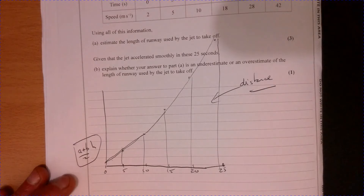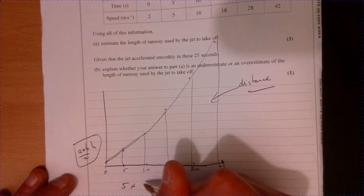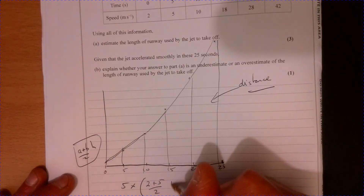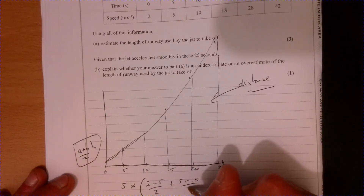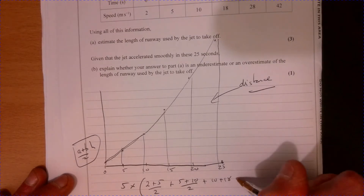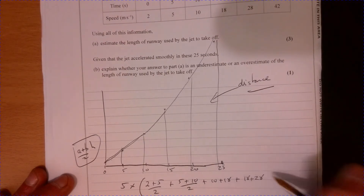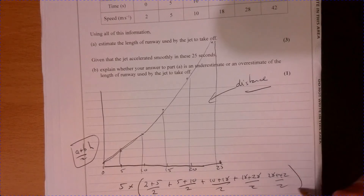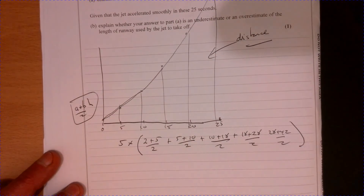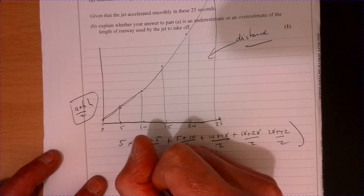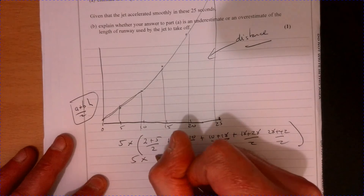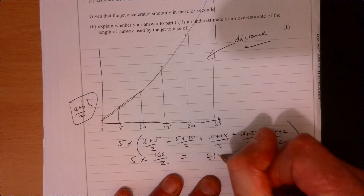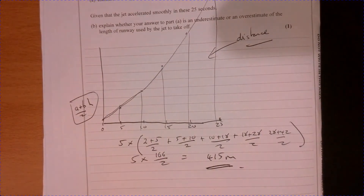Working that out: it's 5 multiplied by (2+5)/2 + (5+10)/2 + (10+18)/2 + (18+28)/2 + (28+42)/2. That gives us 5 times 166/2, which is 5 times 83, giving us 415 meters. So that's part a — nice, three marks.